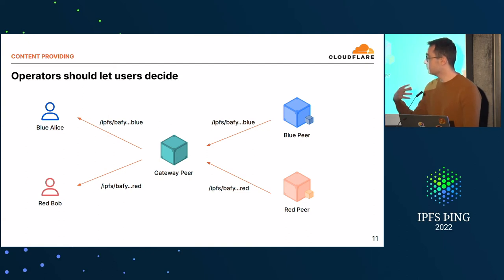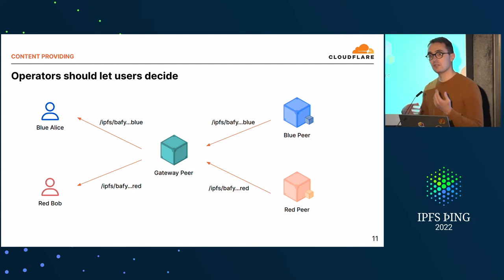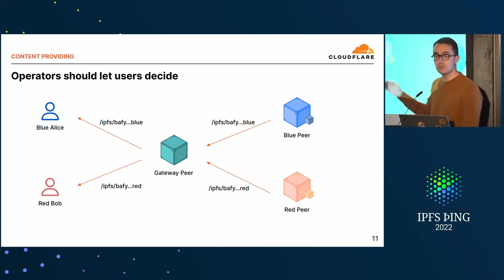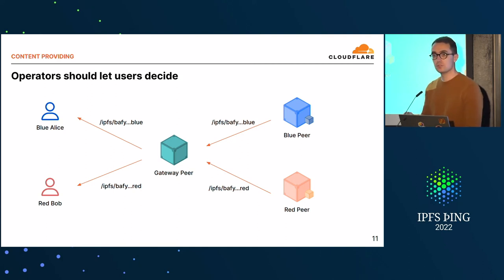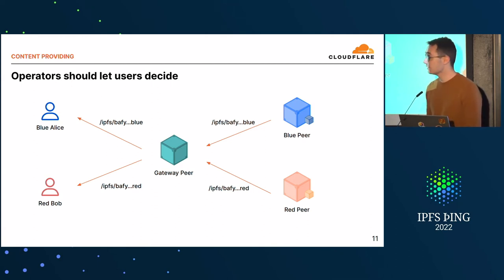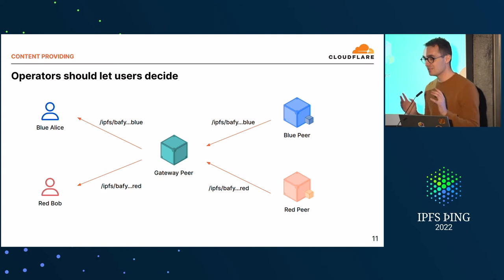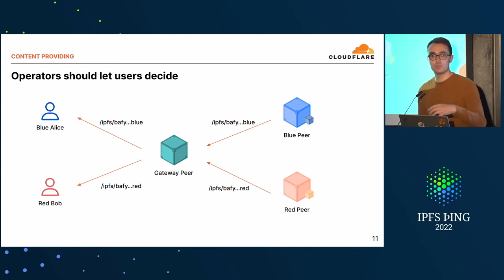Of course, each gateway — maybe a legal entity — may have its own policy. The gateway may at some point decide that certain content should not pass through. But these decisions should be gateway-specific and you should be able to communicate them and switch from one gateway to another. That's why IPFS is great — content addressing means you're able to request the same content from any gateway and validate it without being tied to a specific website.